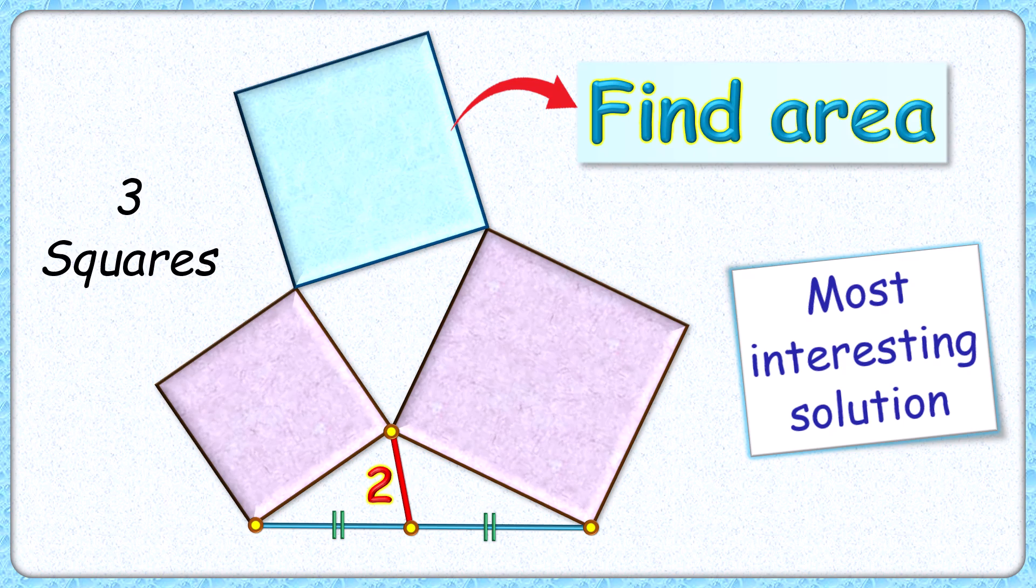Okay, this question has got one of the most interesting solutions. Here given are three squares and this red line segment is formed by joining the vertex of these two squares and midpoint of this blue line segment, and its length is given as 2 centimeters.